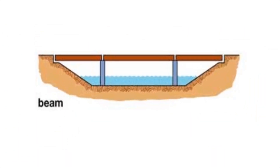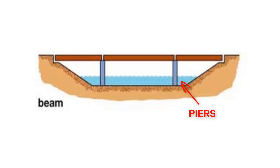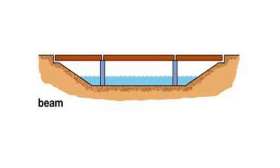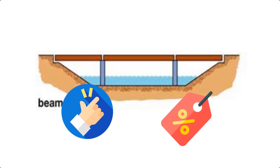Let's start with beam bridges. Structurally, beam bridges consist of horizontal beams supported at both ends by piers or abutments. The weight of the bridge and the loads it carries are transferred directly to the supports. They're often used for short spans like small roadways and pedestrian paths due to their simplicity and cost effectiveness.